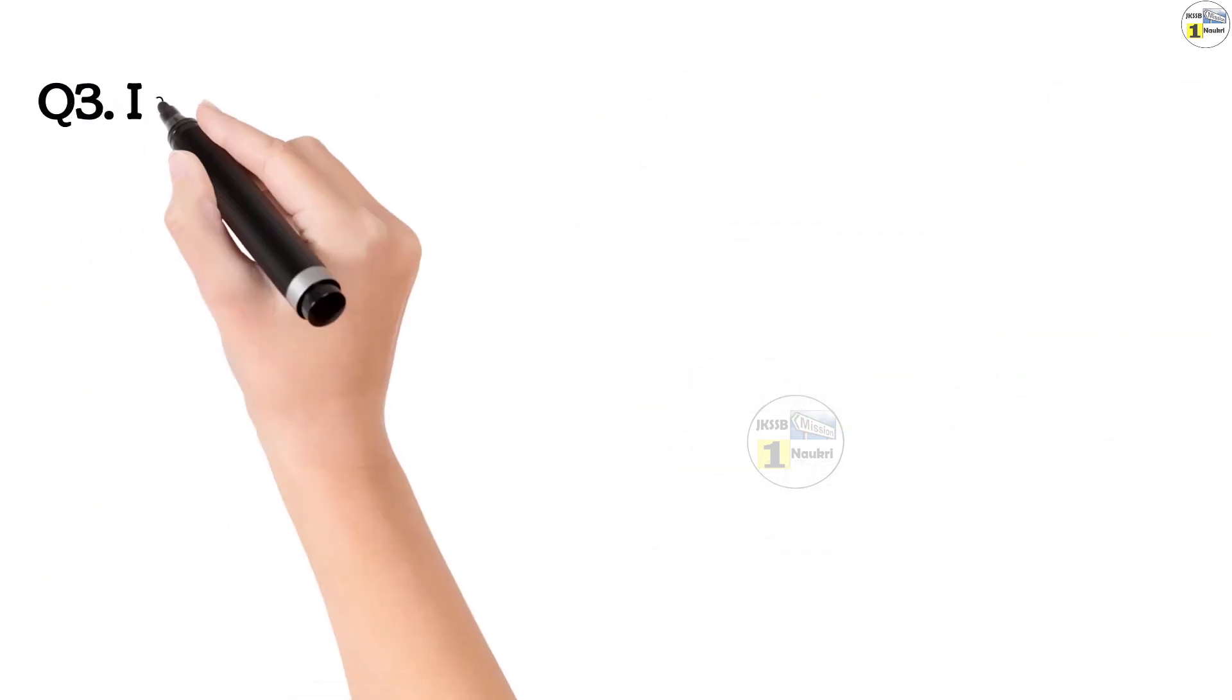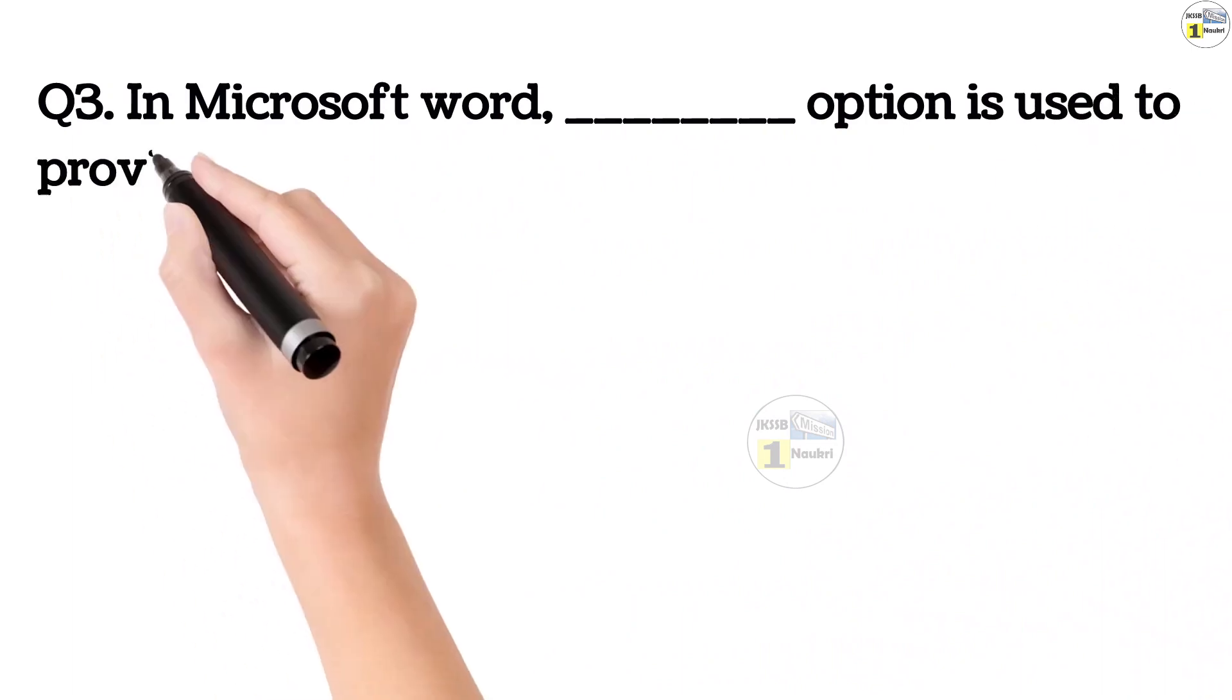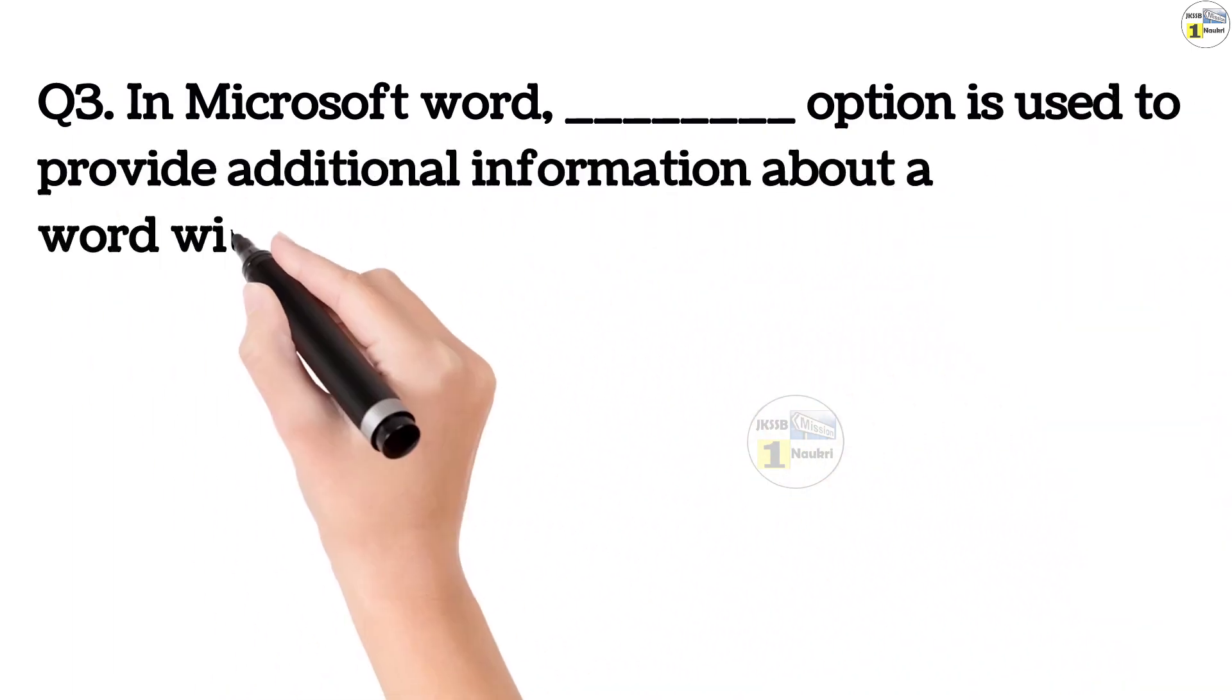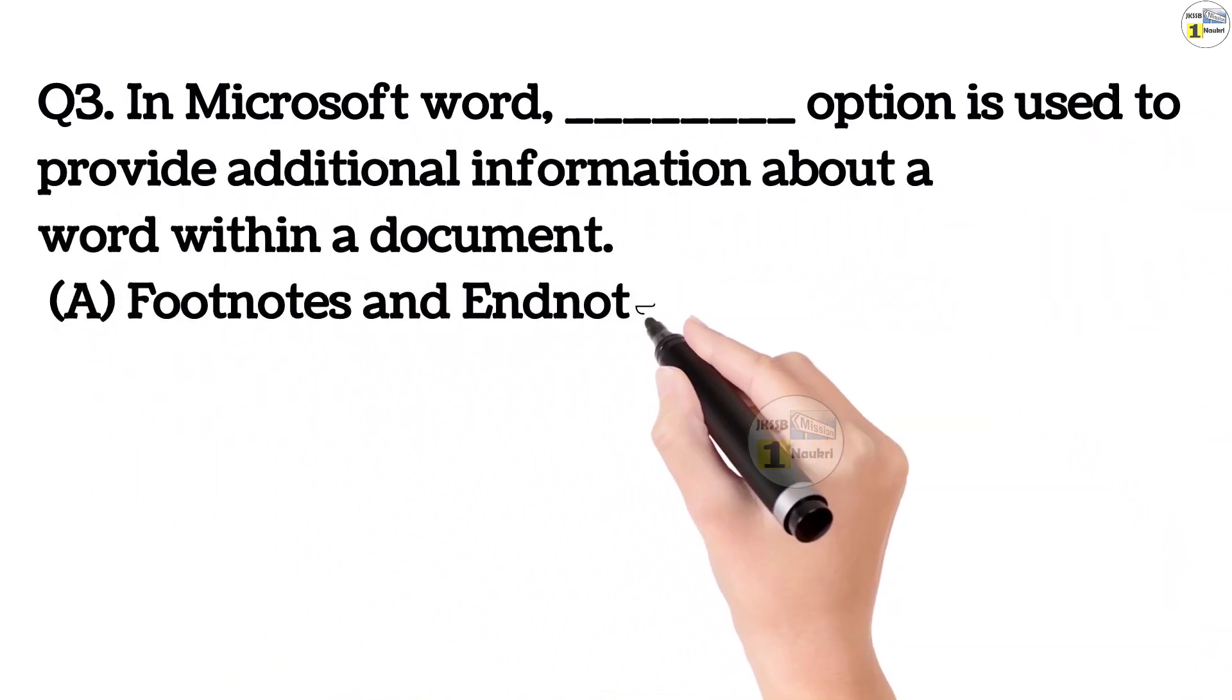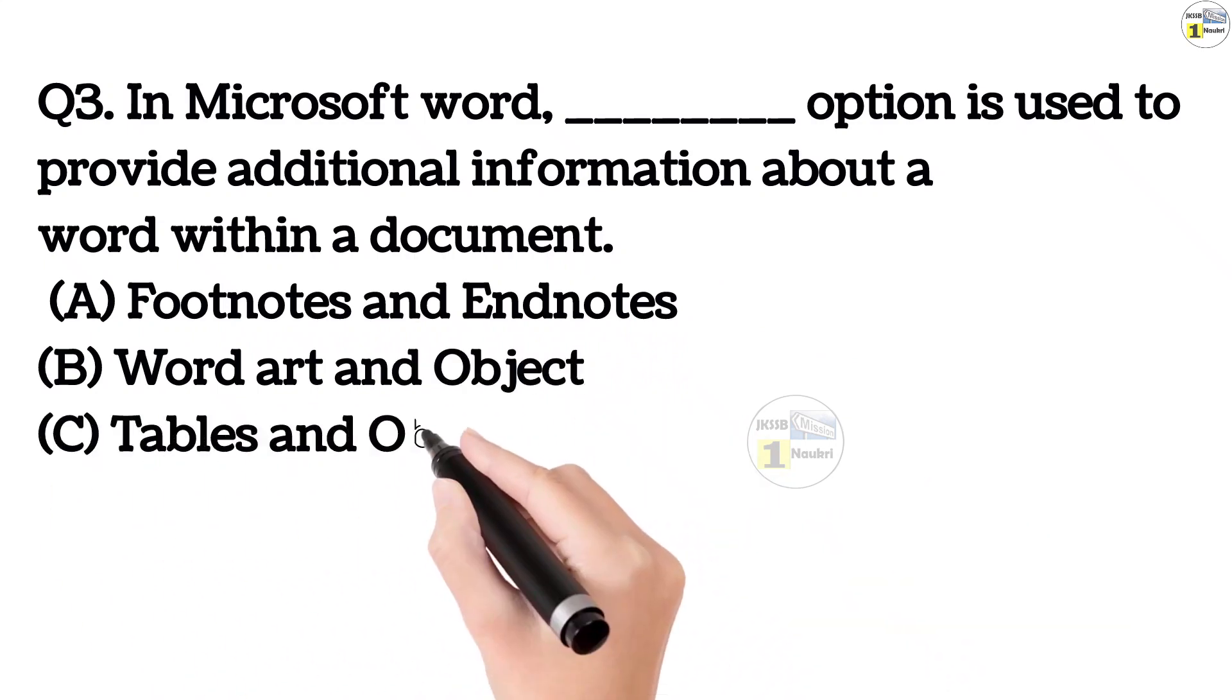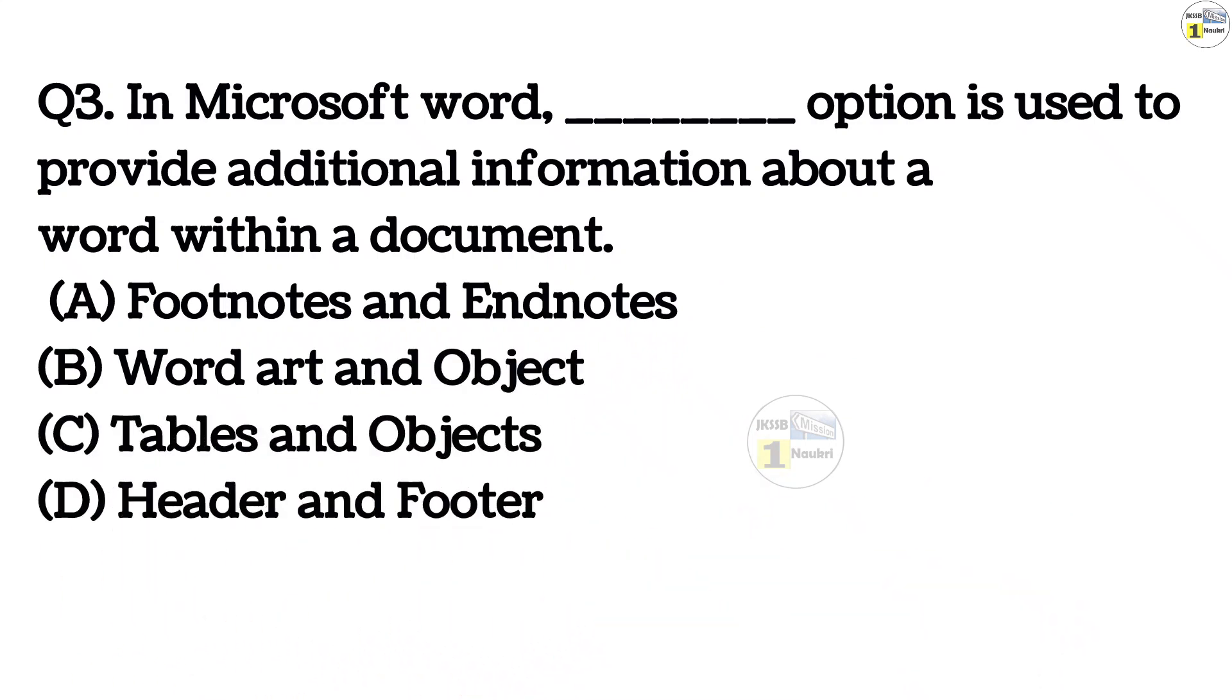Question number 3. In Microsoft Word, dash option is used to provide additional information about a word within a document. Option A, footnotes and endnotes. Option B, wordart and object. Option C, tables and objects. Option D, header and footer.